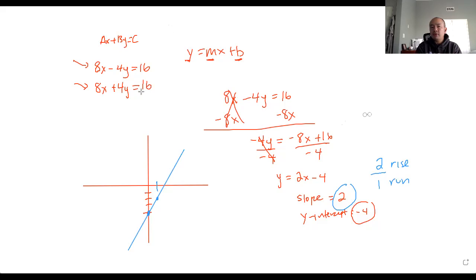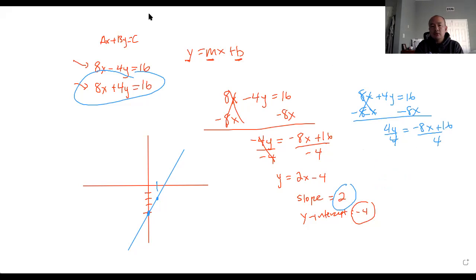Now we're going to do the same thing for the second one, and we're going to do that on the same graph. That's why they call it systems. That's why it's a fancy way of saying systems. So it's 8x plus 4y equals 16. You're going to do the same thing as before. You're going to subtract the 8x. You have 4y equals negative 8x plus 16. You divide by 4. So you have y equals negative 2x plus 4.